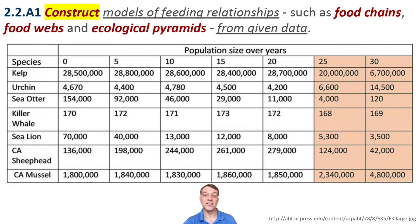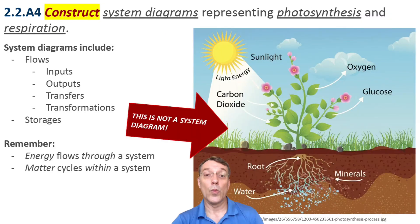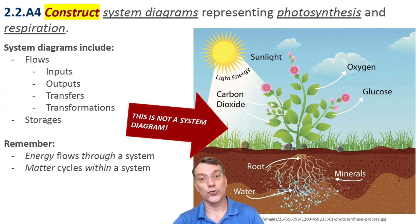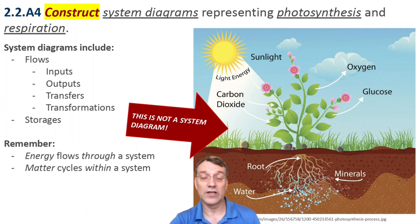A key skill in ESS is constructing models of feeding relationships from data — you might be asked to do this in one of your Paper 2 questions in Section A. This table shows population changes in a marine ecosystem over time, which you could use to build food chains, food webs, or ecological pyramids showing relationships between kelp, urchins, sea otters, and other species. When constructing system diagrams for processes like photosynthesis and respiration, make sure you include flows, inputs, outputs, transfers, transformations, and storages. Remember on the exam to always write system diagrams as boxes and arrows — they're not looking for a sketch of the organisms.